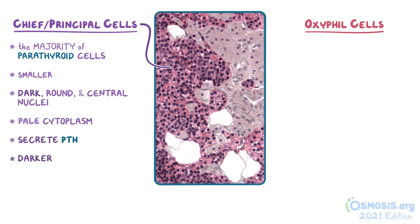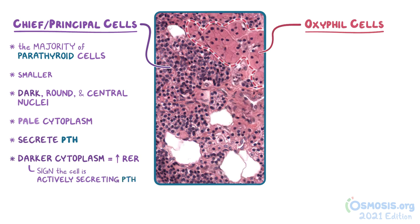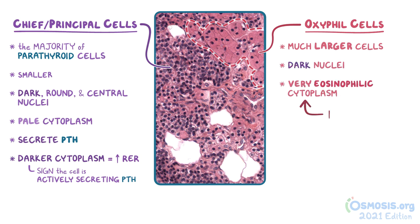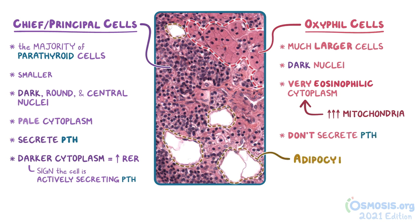If the cytoplasm looks darker, it's because of an increase in rough endoplasmic reticulum, or RER, which stains strongly and is a sign that the cell is actively secreting PTH. The oxyphil cells are the much larger cells that also have dark nuclei, but in addition have a very eosinophilic cytoplasm because of their higher content of mitochondria. These cells don't secrete PTH, and they increase in number overall with age. Adipocytes can also be seen within the parathyroid in this image, and they too increase in number with age.